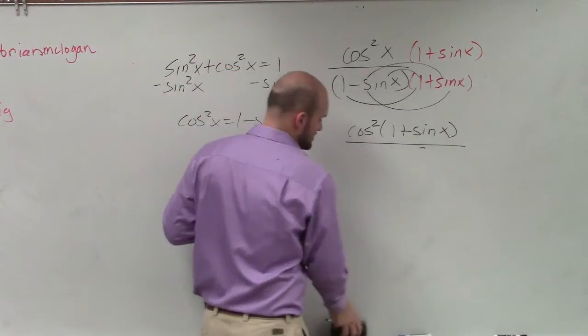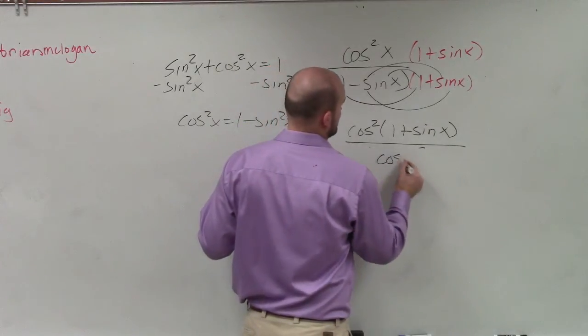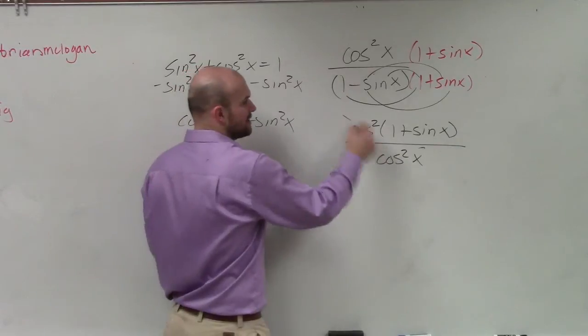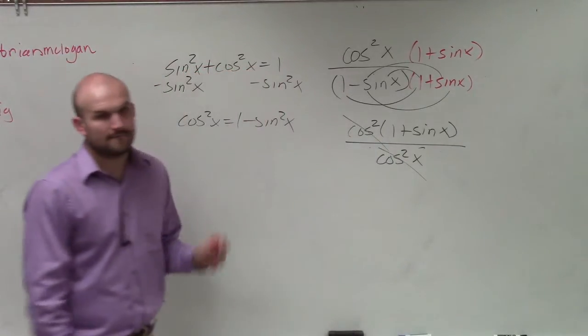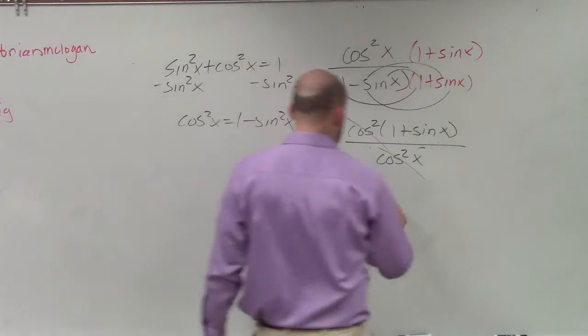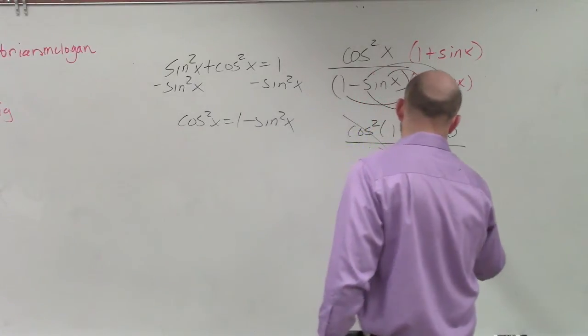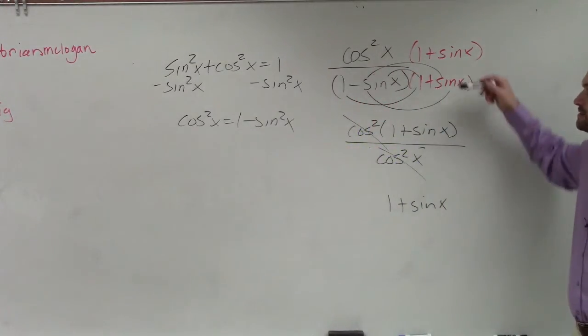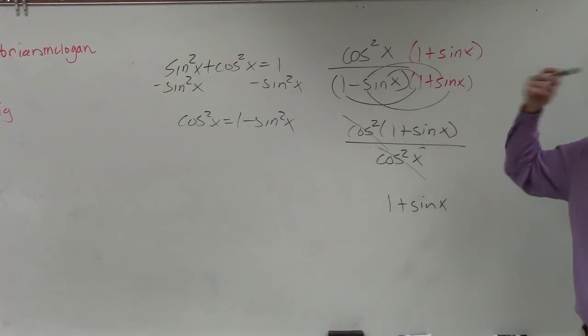So if I rewrite that as cosine squared of x, now my cosine squareds divide out. And my last expression I have is just 1 plus sine of x. Just remember, when you multiply by your conjugate, you have to do it on the top and the bottom.